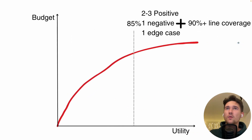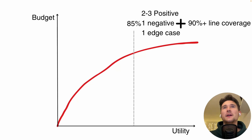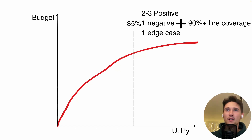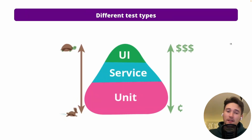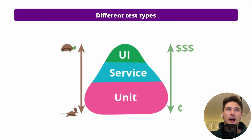That's not the absolute minimum if you're in a rush, but it's the minimum you want. What I consider quite well done is two to three positive use cases, one negative, one edge case, plus 90% or above line coverage - around 95%. Spending the remaining time pushing to 100% would be overkill.